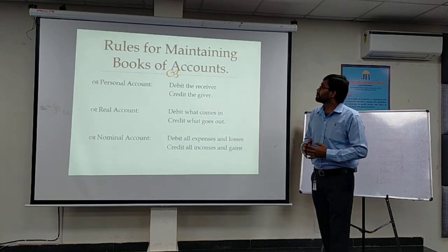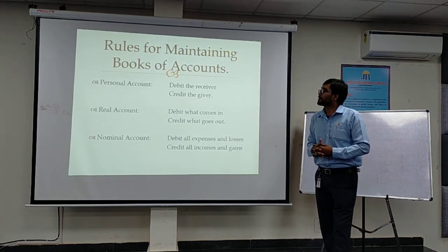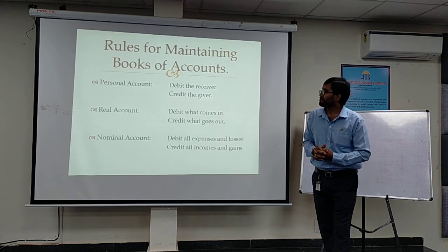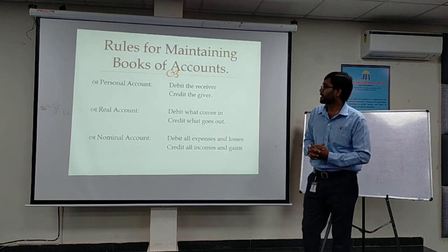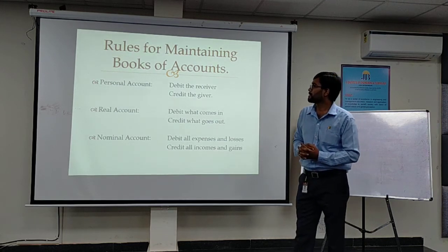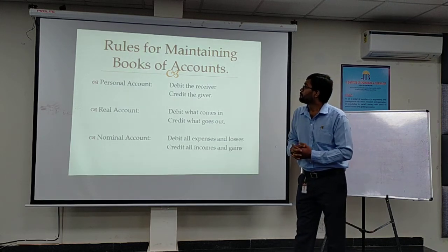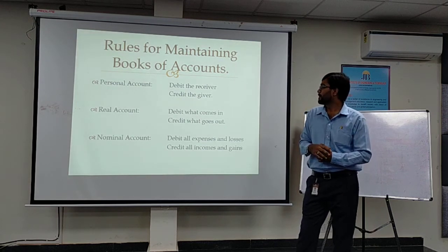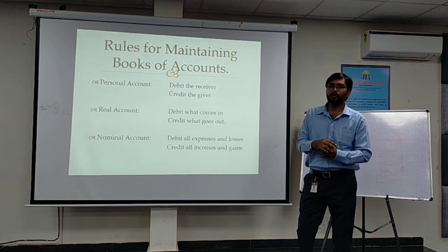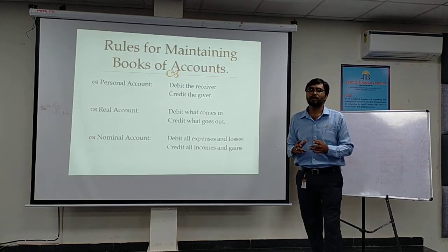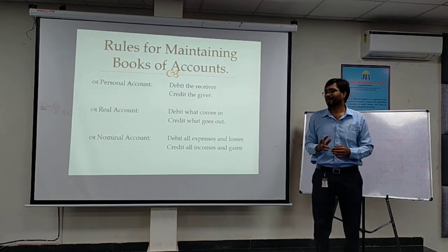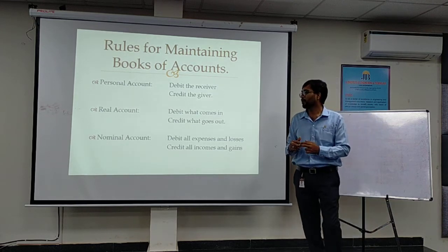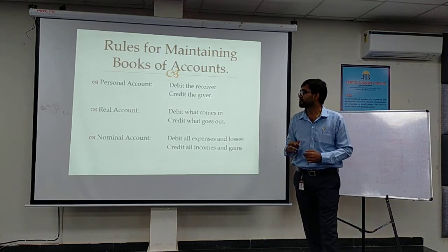Rules for maintaining books of account — also called the golden principles — are based on the three account types. For personal account: debit the receiver, credit the giver. For real account: debit what comes in, credit what goes out. For nominal account: debit all expenses and losses, credit all incomes and gains.